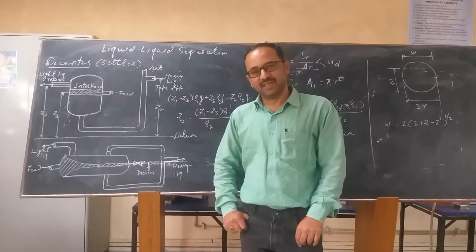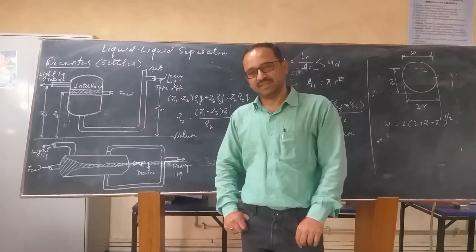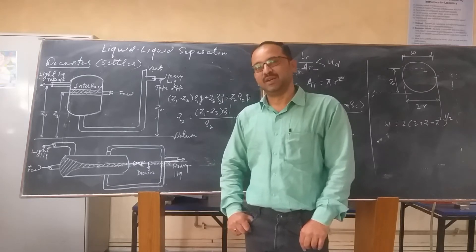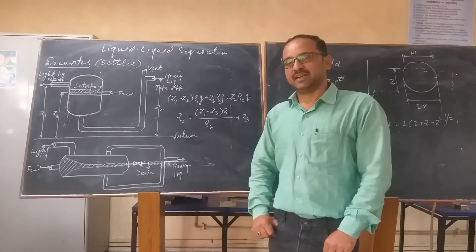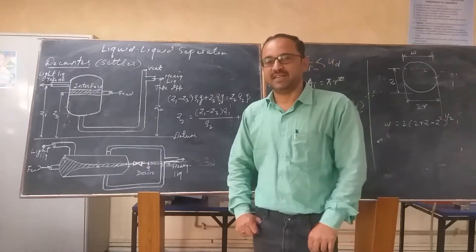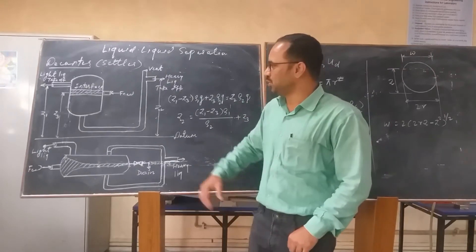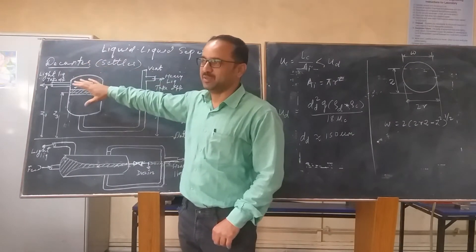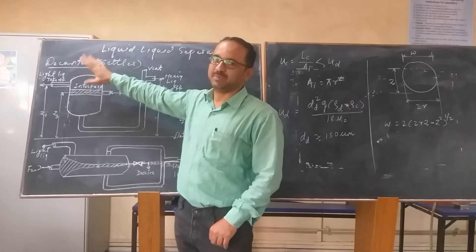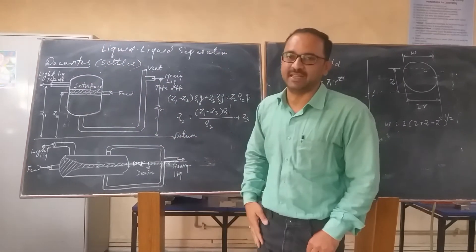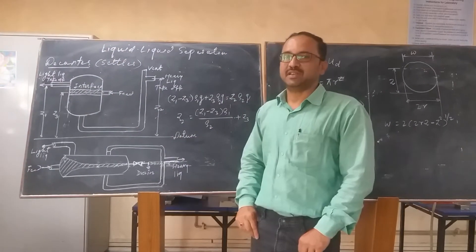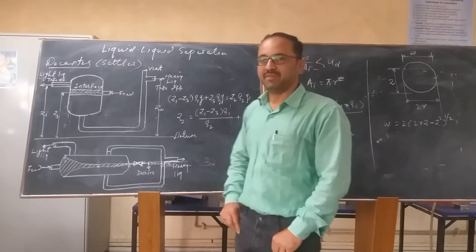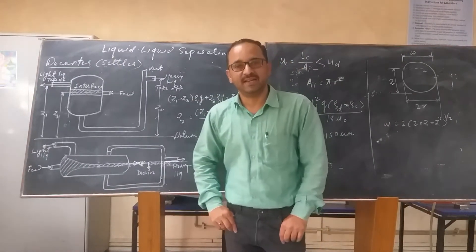The decanter is used to separate liquid mixtures based on a sufficient difference in the density of the liquids as a continuous phase and a dispersed phase. There are two phases in the decanter: the continuous phase and the dispersed phase. It is not necessarily the case that the dispersed phase or continuous phase is the heavy liquid or the light liquid.